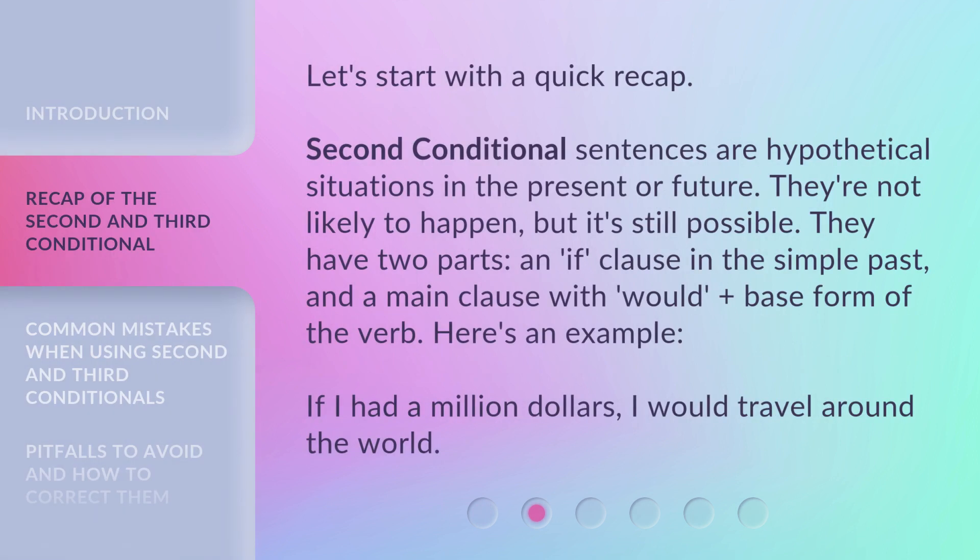Let's start with a quick recap. Second conditional sentences are hypothetical situations in the present or future. They're not likely to happen, but it's still possible. They have two parts: an if clause in the simple past and a main clause with 'would' plus the base form of the verb. Here's an example: 'If I had a million dollars, I would travel around the world.'